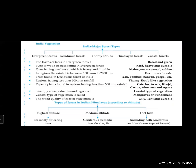In regions having less than 500 mm rainfall, you get thorny shrub-like vegetation. Types of plants found in such regions include catechu, acacia, khejri, cactus, aloe vera, and agave.